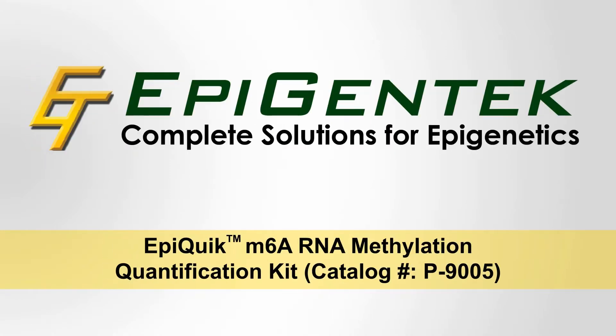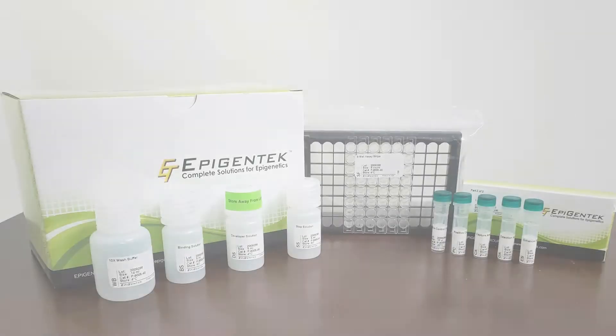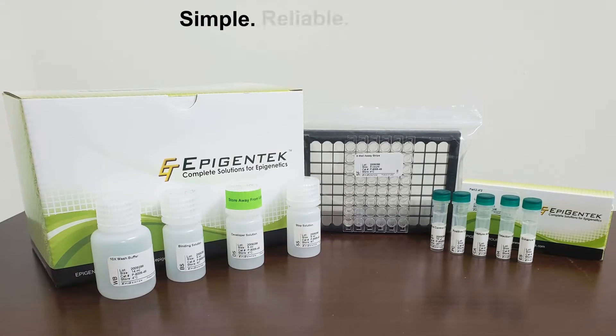The EpiQuick M6A RNA methylation quantification kit is an ELISA-like assay for the colorimetric quantification of M6-methyladenazine. This assay is a simple, reliable way to rapidly detect M6A methylation.